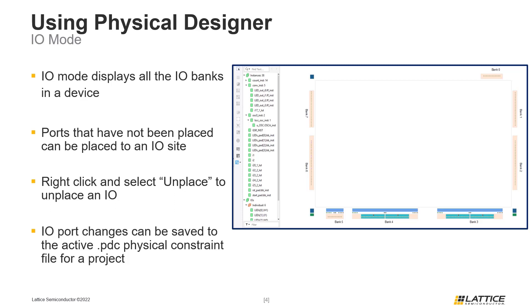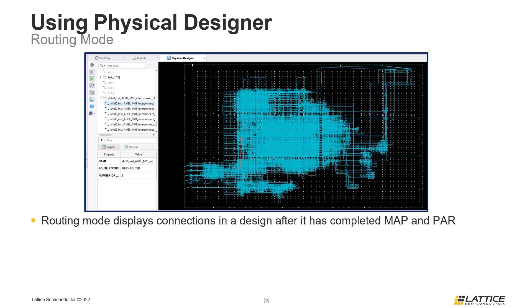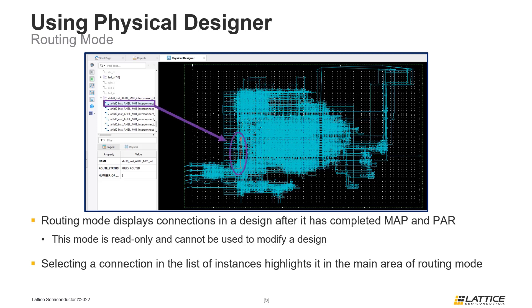Now that we've discussed Physical Designer's placement and I.O. modes, we are going to review the basics for its routing mode. Physical Designer's routing mode will display the routed design after it has completed place and route. An important thing to remember is that routing mode is read-only and cannot be used to rearrange how a device is placed or routed. The appearance of this mode depends on factors like the selected device, complexity of a design, and how a design was constrained. The main functionality of this mode is to observe the longest paths in a design to improve their timing by changing where components are placed and how they are routed. The browser area of the routing mode window contains a list of the connections in a design, and selecting a component from this area will highlight it in the main window.